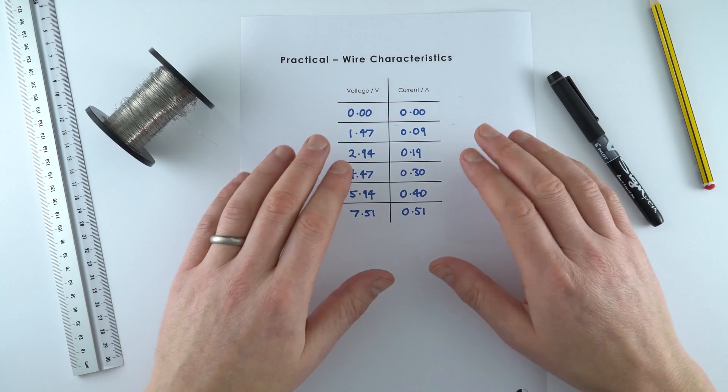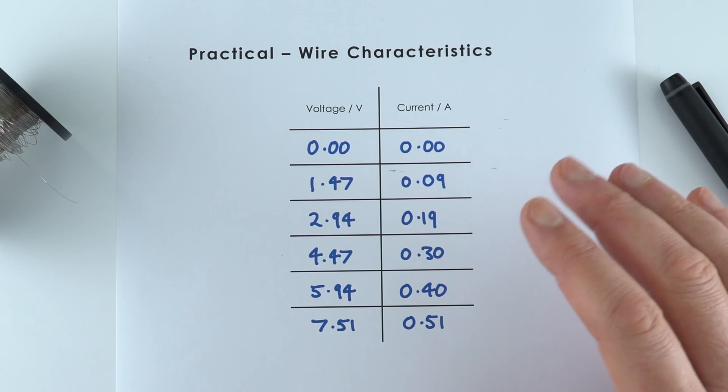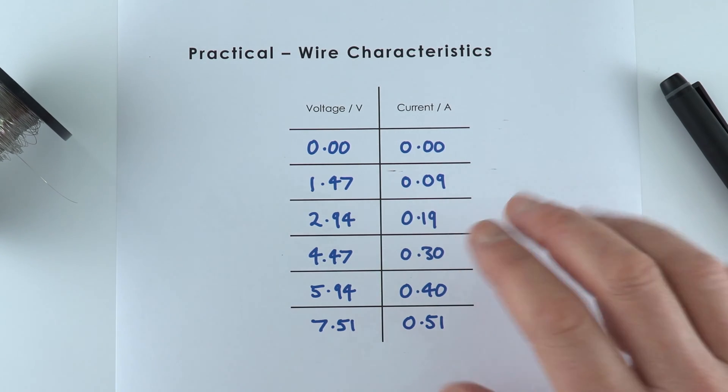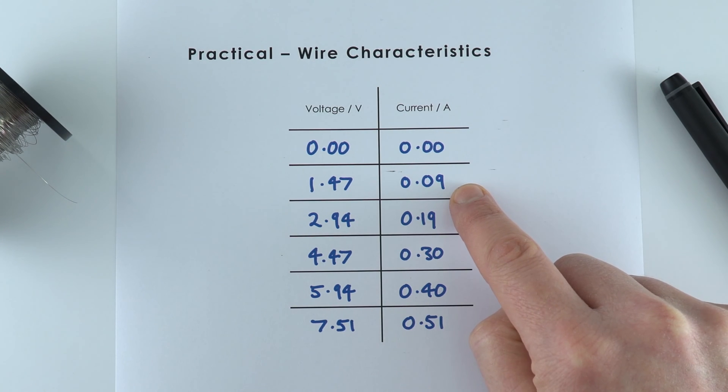So when I tested the piece of wire these are the values that I recorded. I did it just by pausing the video and looking at the reading from the voltmeter and the ammeter at that time.